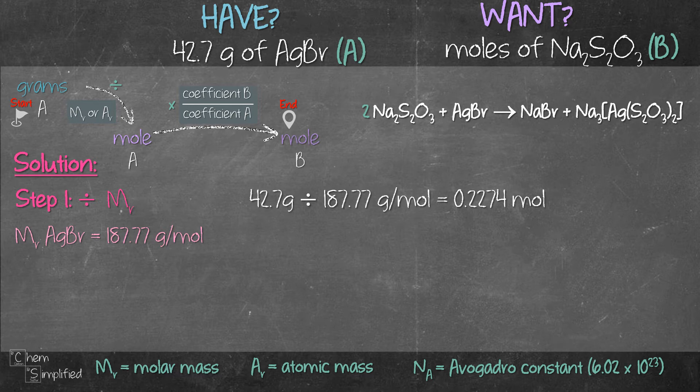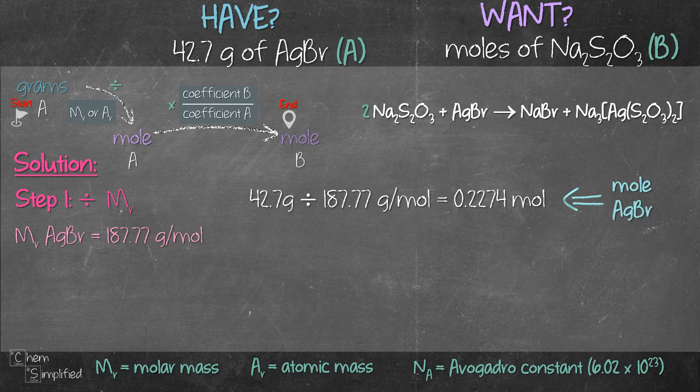So we take 42.7 grams and divide it with 187.77 grams per mole and we get 0.2274 mole. What we have just calculated is mole A, which is the mole of AgBr.